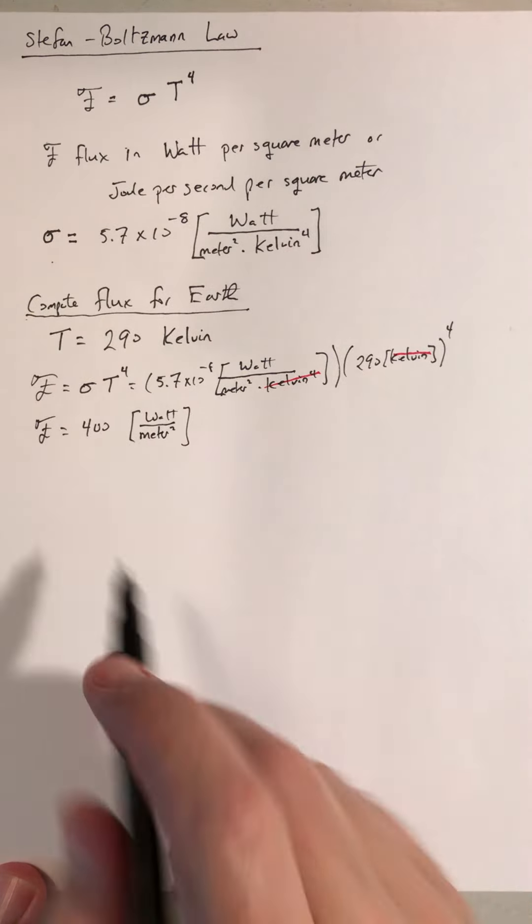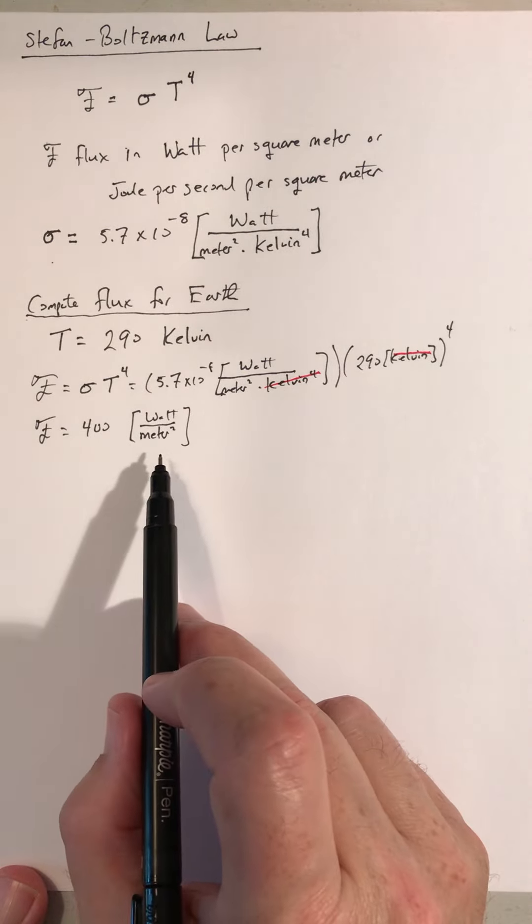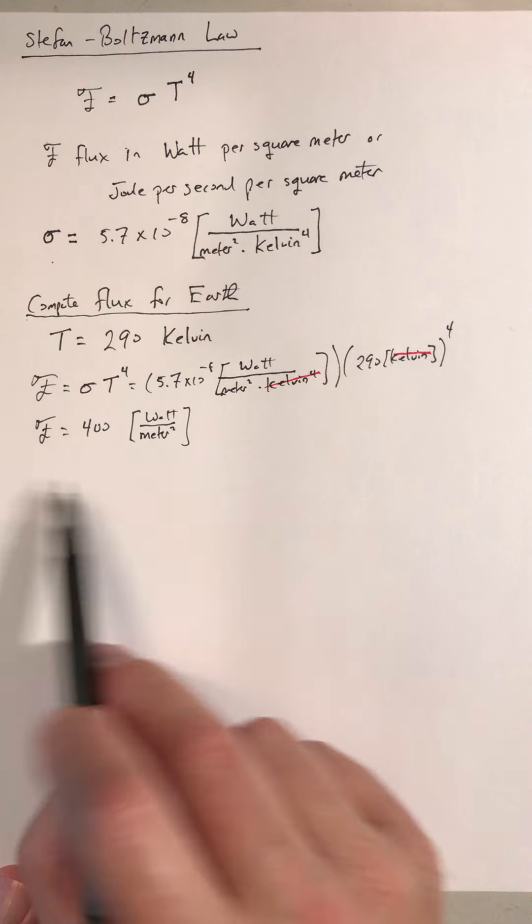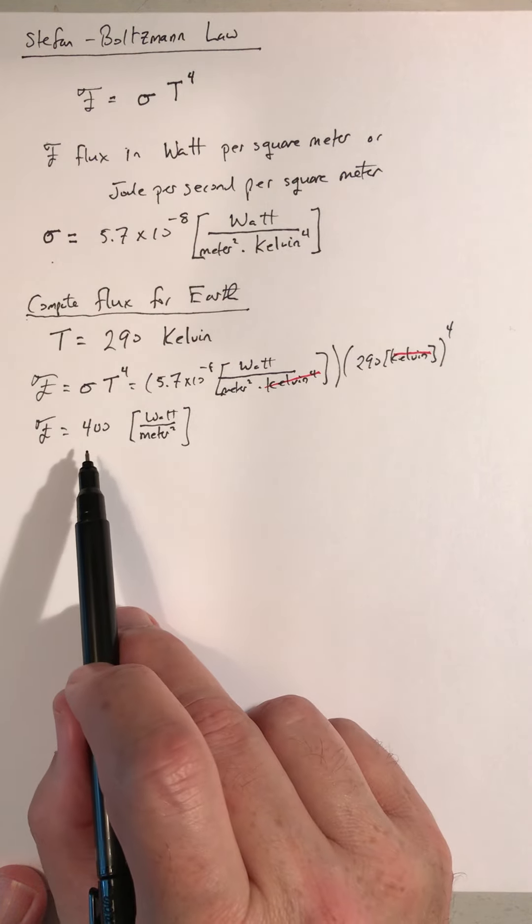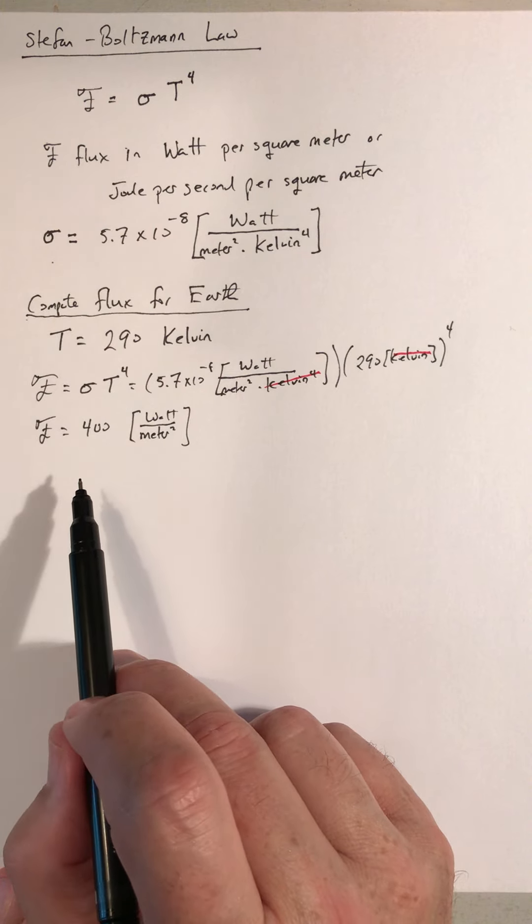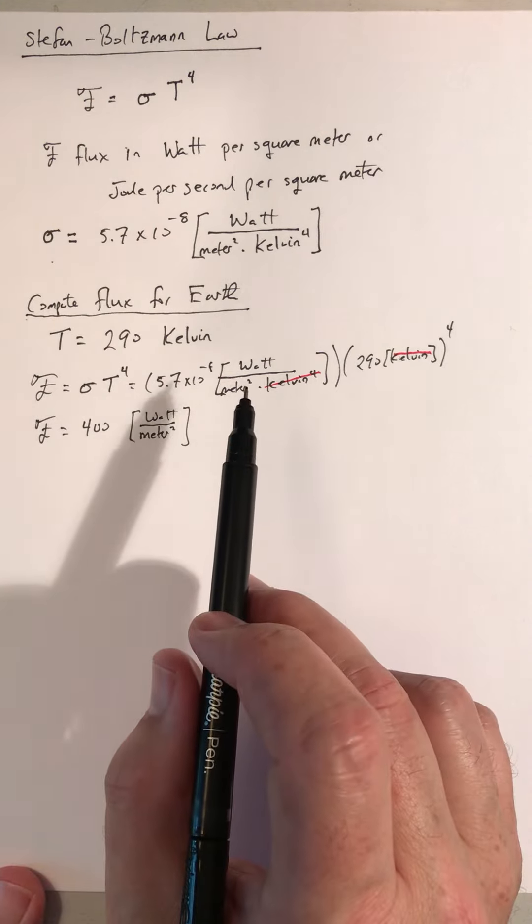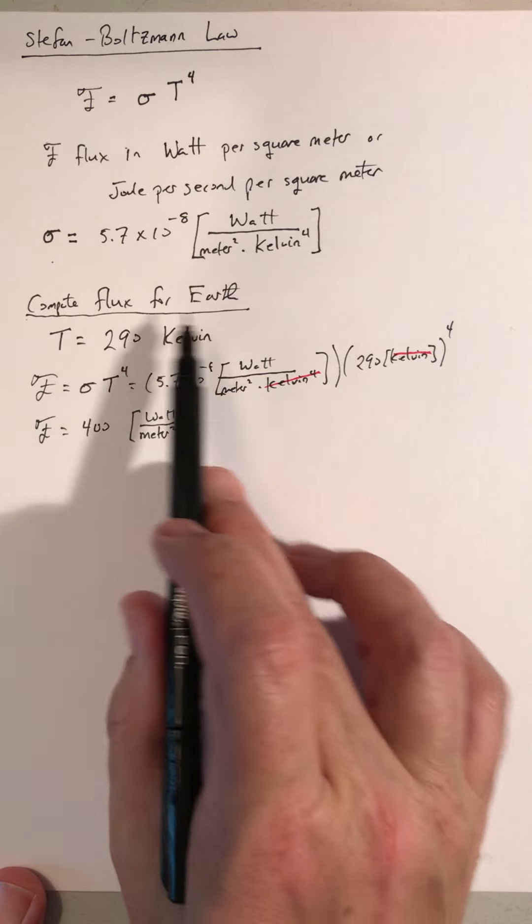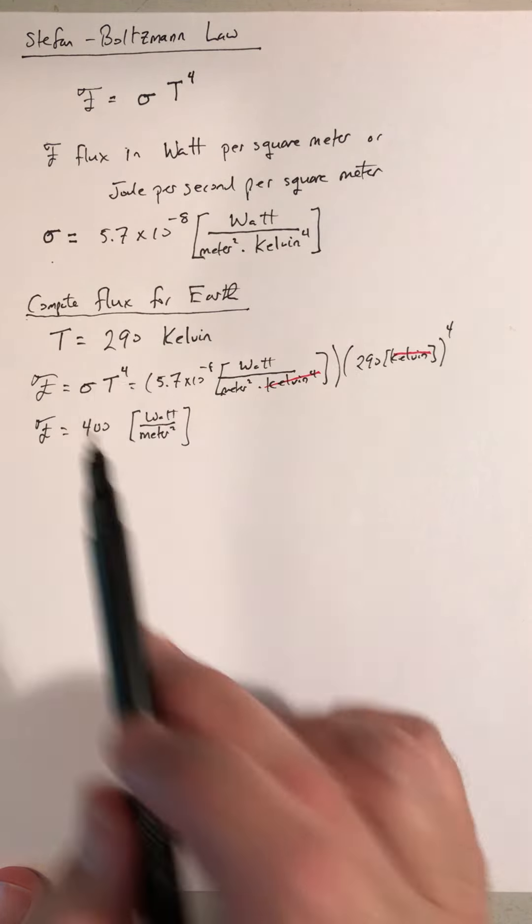So every square meter of Earth's surface, on average, is radiating 400 watts of power out. And that is just coming from what our average surface temperature is.